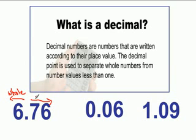Anything to the right of the decimal are decimal numbers, or these are the numbers that are less than 1.